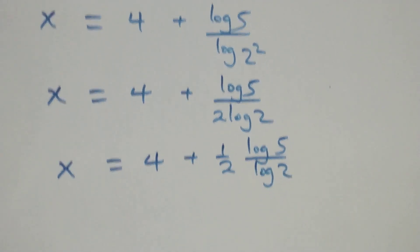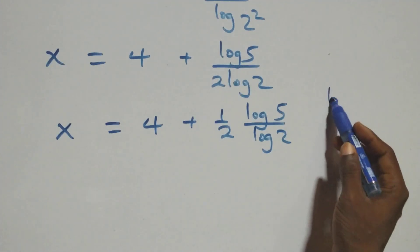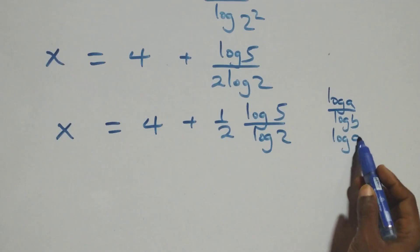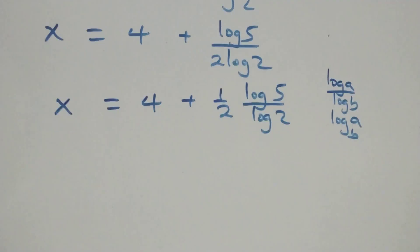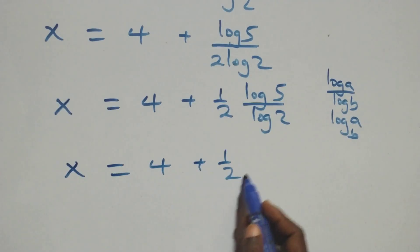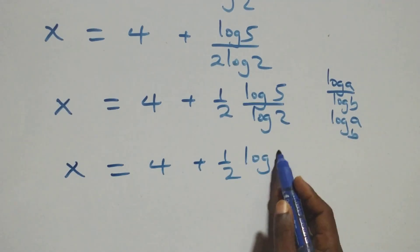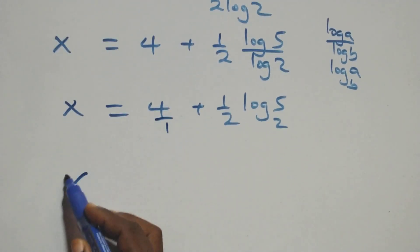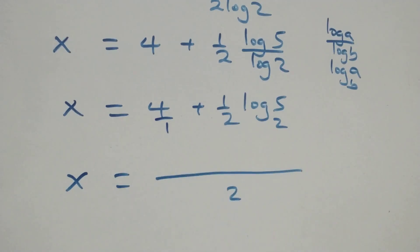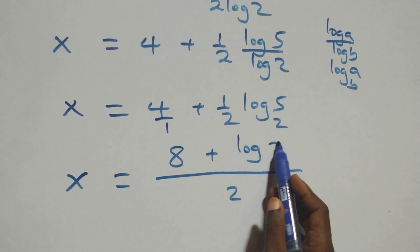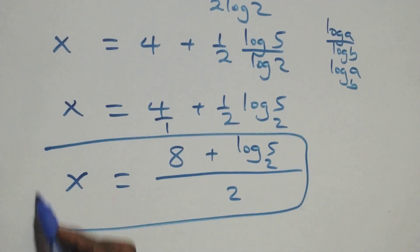When we apply the change of base rule, log a over log b is the same as log base b of a. So x equals 4 plus one half times log base 2 of 5. Bringing this together as one fraction — 4 is 4 over 1 — x equals (8 plus log base 2 of 5) over 2.